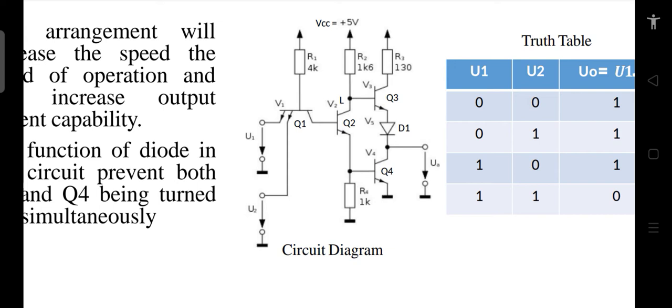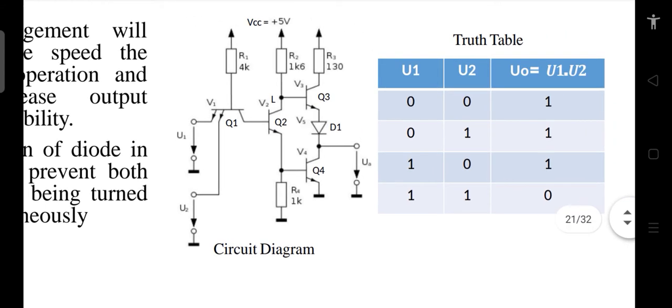The input transistor is a multi-emitter transistor, meaning in the same circuit for the same transistor we make multiple emitters. With the help of this multi-emitter arrangement we can reduce area, and multiple emitters work as multiple transistors. Multiple inputs can be applied to those multiple emitters. Let's verify the functionality of the circuit arrangement used for TTL operation.